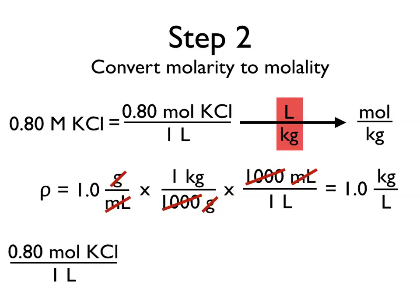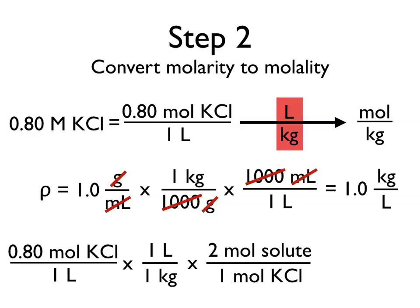So now, we can take our 0.80 moles of potassium chloride per 1 liter, multiply it by 1 liter per 1 kilogram, or our inverse density, and then this is where we have to note the fact that there are 2 moles of solute per 1 mole of KCl, since when that KCl is put in solution, it's going to break up into 2 moles, 1 mole of potassium, 1 mole of chloride. So that means that the molality of this solution is 1.6 moles per kilogram.